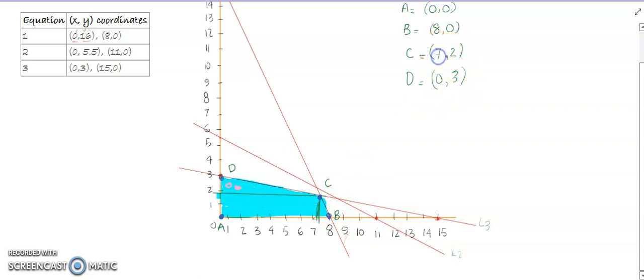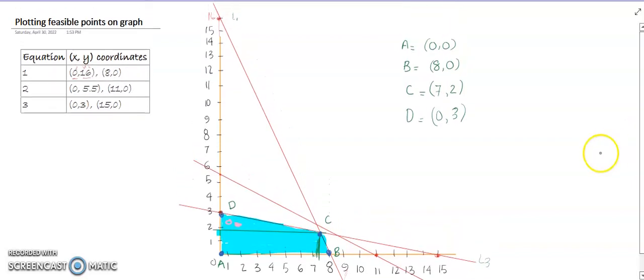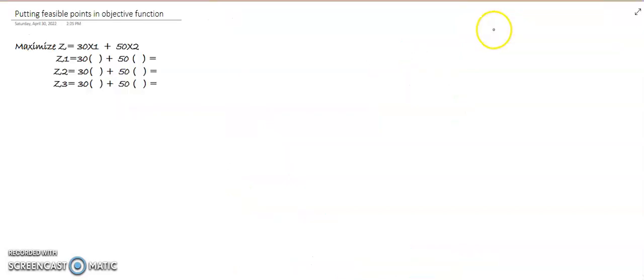When you will solve it on graph paper, it will come to 7. Following are the values that we have obtained from solving the graph, and our feasible solution is lying in between this region. Now what we have to do is take all these points and put them into the objective function.